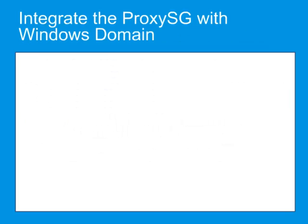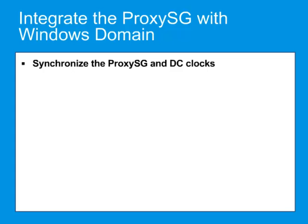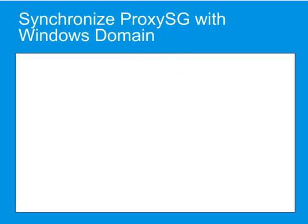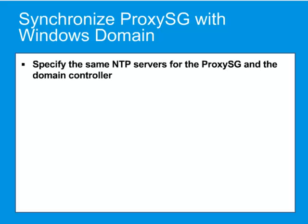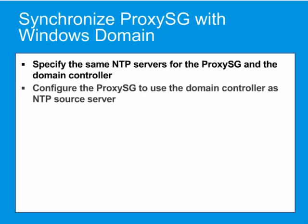To integrate the ProxySG into your Windows domain, you must complete the following tasks: synchronize the ProxySG and domain controller clocks, and join the ProxySG to the Windows domain. ProxySG cannot join a Windows domain unless its internal clock is in sync with the domain controller. To ensure that the clocks are synchronized, use either of the following techniques: specify the same NTP servers for the ProxySG and the domain controller, or configure the ProxySG to use the domain controller as the NTP source server.